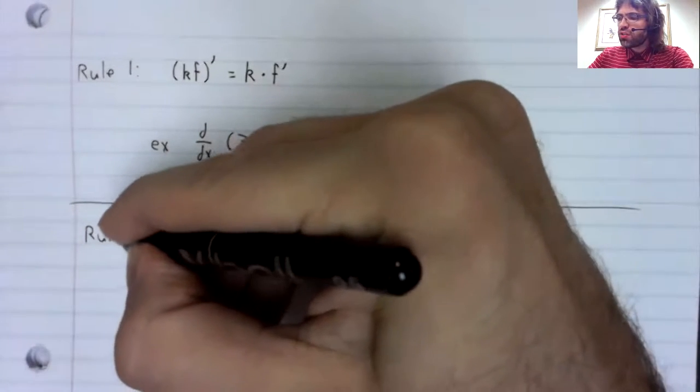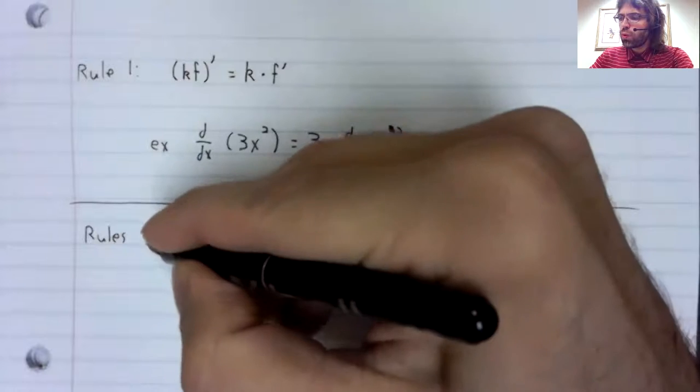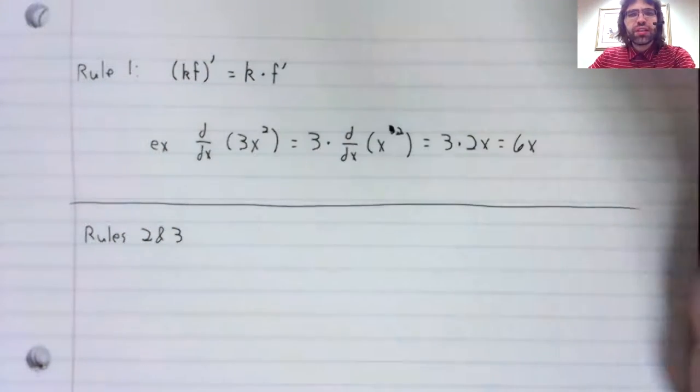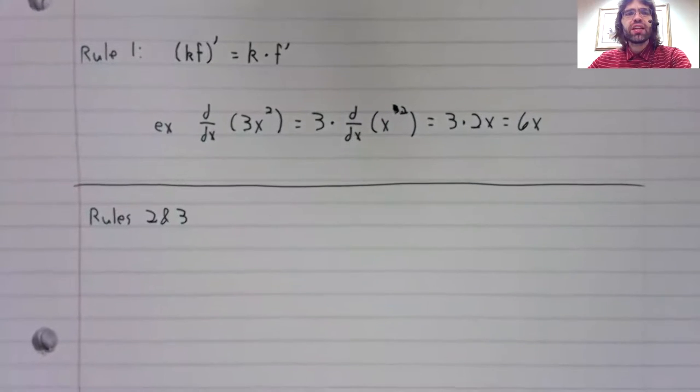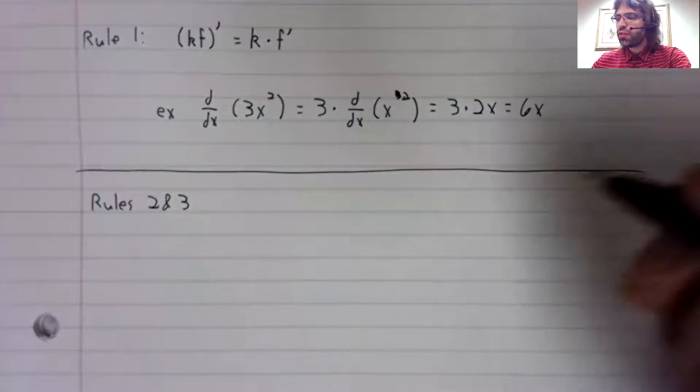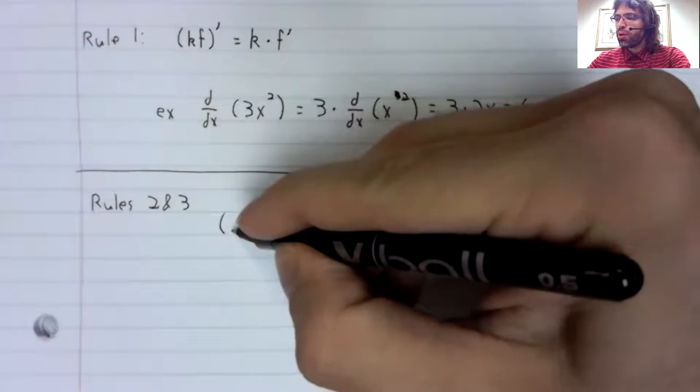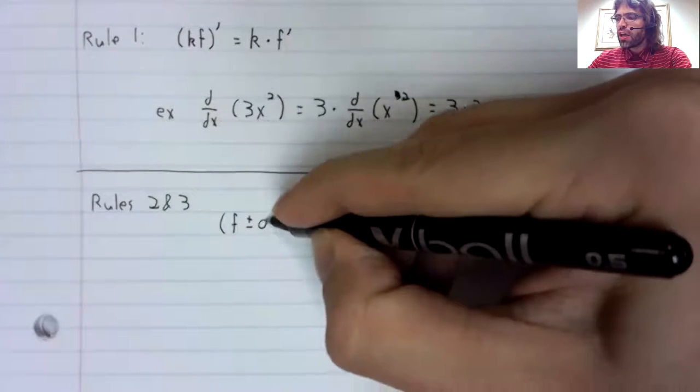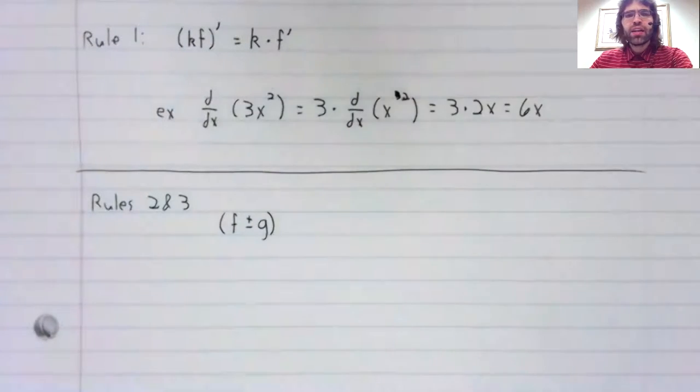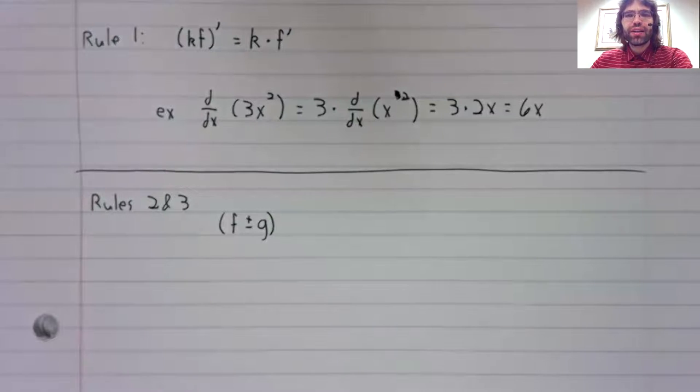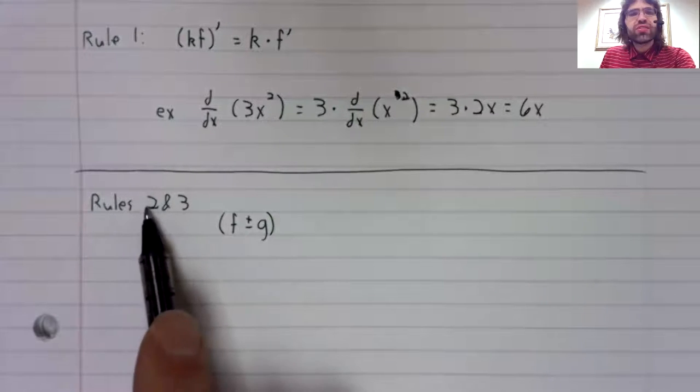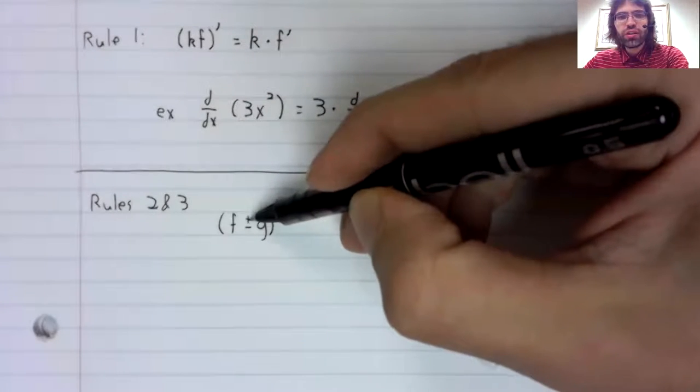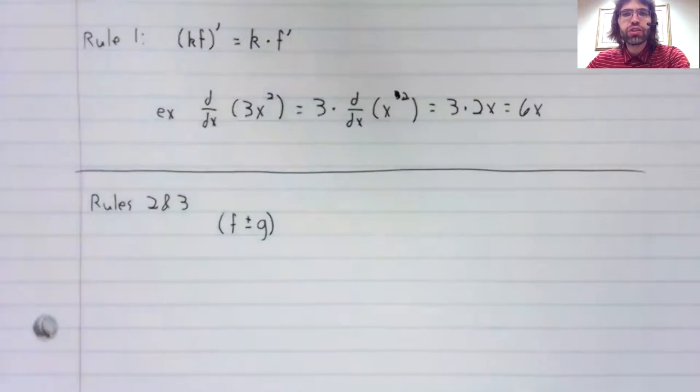These next two rules are similar enough that they can be stated as one. Suppose we have two functions and we're adding or subtracting them. That's why I say this is two rules - one for addition, one for subtraction.